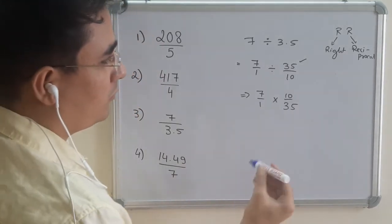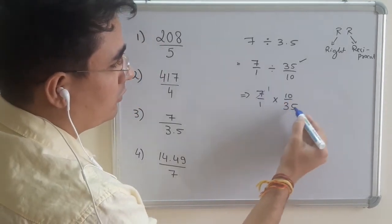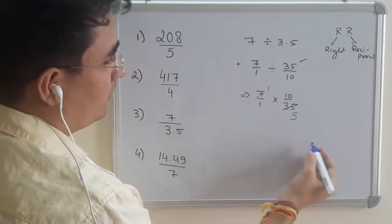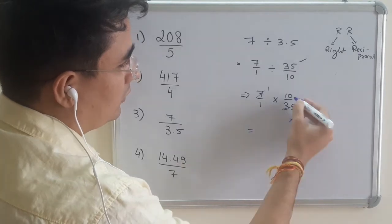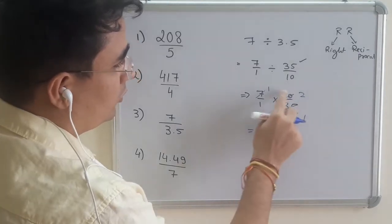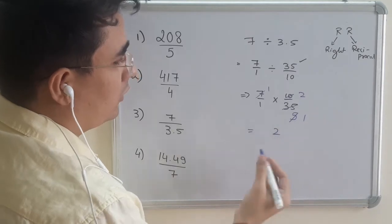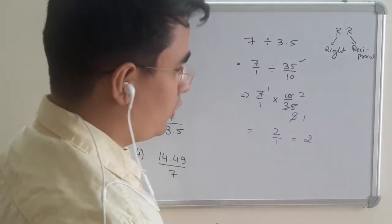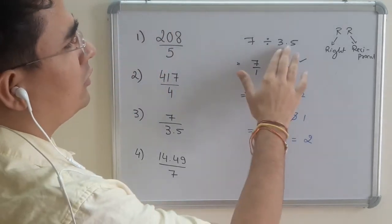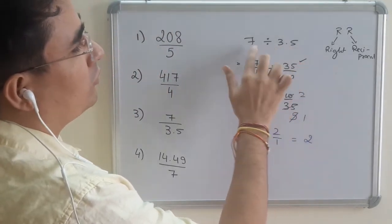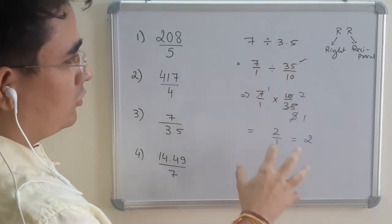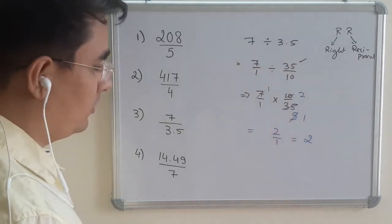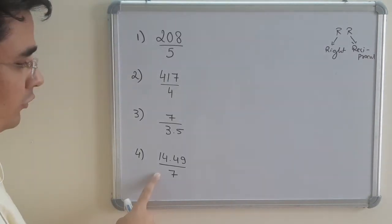Instead of multiplying directly, I do cancellation. Since 7 and 35 are both in the table of 7 — 7 times 5 is 35 — they cancel. We get 1 times 10 upon 5 times 1, which is 10 upon 5, which equals 2. So our answer is 2. You can verify: 3.5 times 2 is 7. The objective of this question is to show the method, because you won't always get such a direct number.